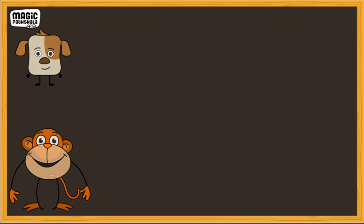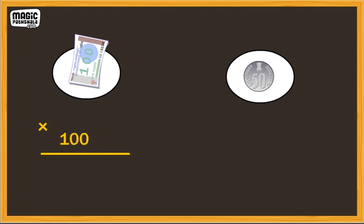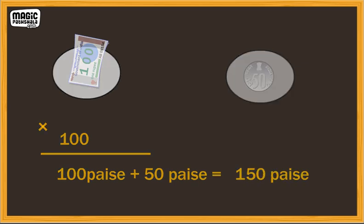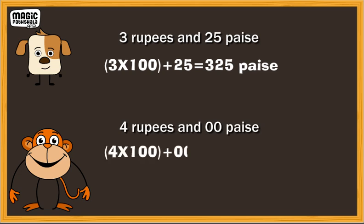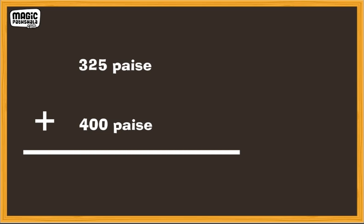Convert the amount into paise. To convert Rs. and paise into paise, we multiply the amount in Rs. by 100 and add the number of paise to it. So, Rs. 3.25 will be 325 paise and Rs. 4.00 will be 400 paise. Let's find out the sum by simply adding the two numbers. We get 725 paise.